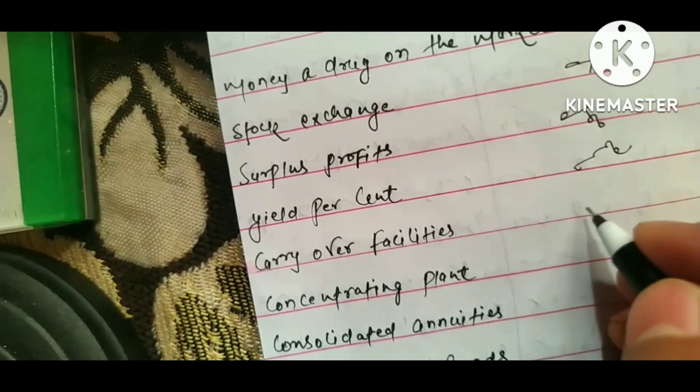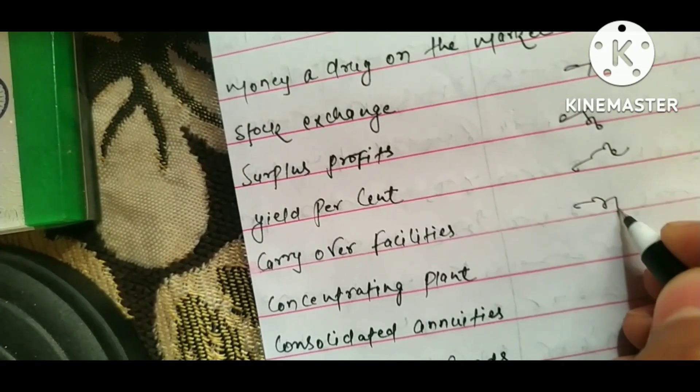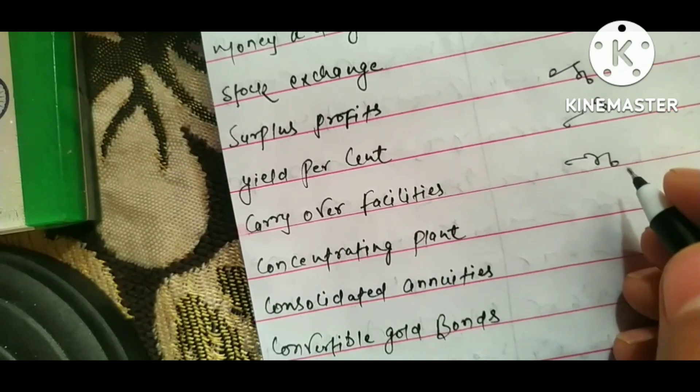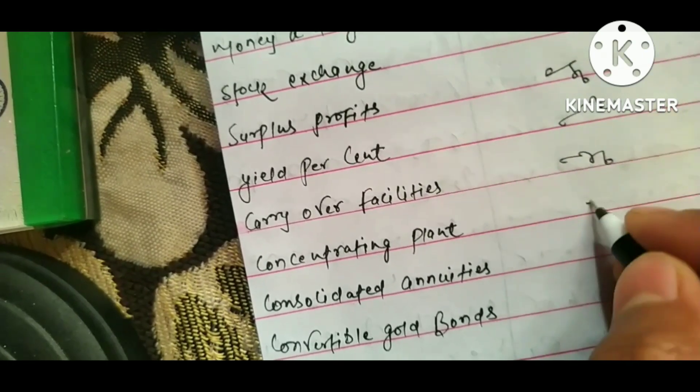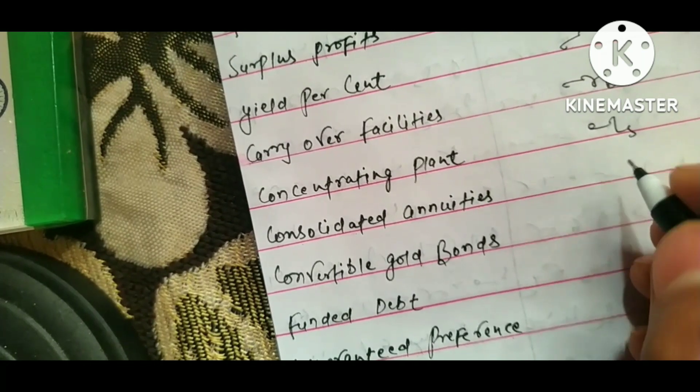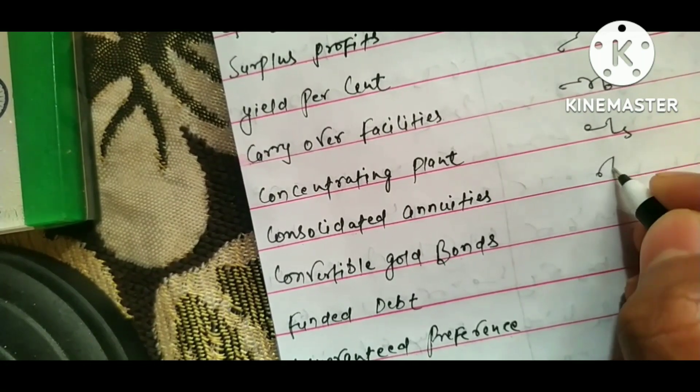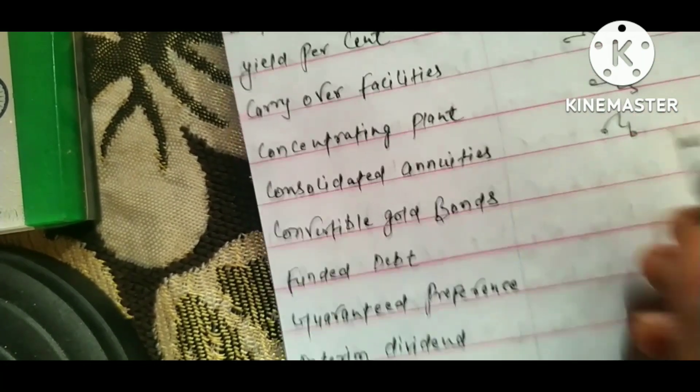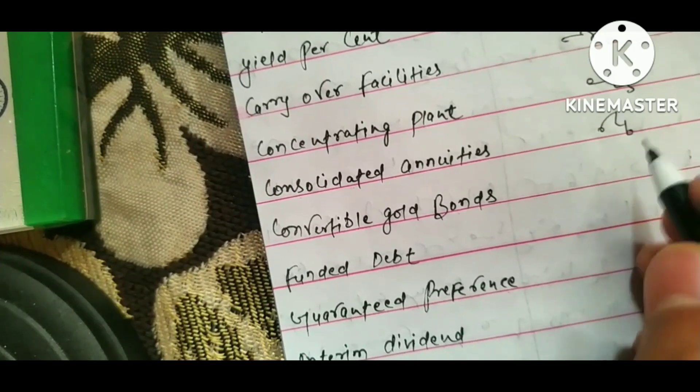Carry-over facilities. Concentrating plant. Consolidated annuities. Convertible gold bonds.